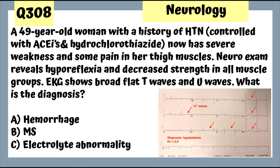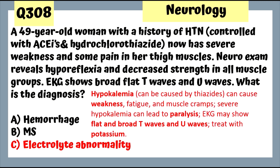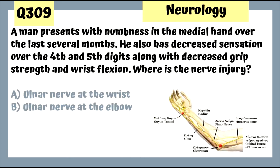Question 308: A 49-year-old woman on ACE inhibitors and hydrochlorothiazide has severe weakness; EKG shows flat T waves and U waves — this is an electrolyte abnormality, specifically hypokalemia caused by thiazide diuretics. Hypokalemia causes weakness, fatigue, muscle cramps, and can lead to paralysis. EKG shows flat broad T waves and U waves. Treat with potassium.